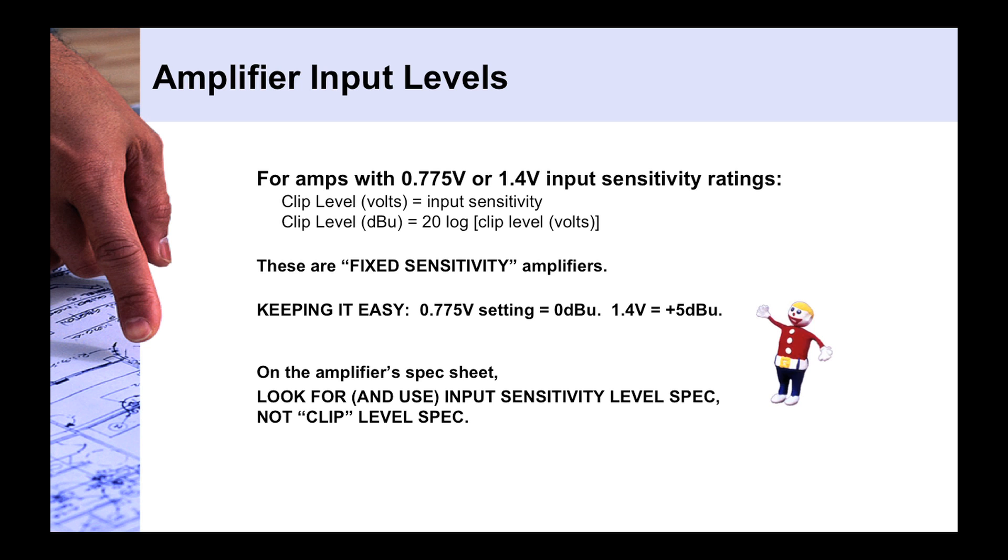Well, amplifiers are very interesting devices in that they may or may not have a set input clip level. And what they call an input clip level may not actually be what you want. What you really need to look for in all amplifiers is the input sensitivity level spec, not the clip level spec. Now that might sound a little backwards, but the reason for that is that many amplifiers will clip at a certain level after the limiter is kind of tapped out. They will have built-in limiters so that if you're sending it too strong of a signal, it's not going to clip, it's just going to compress the heck out of it. And that may be at a different level than what the actual input sensitivity is. So for our cases in designing sound systems, we really need to look at what the input sensitivity rating is of a given amplifier.